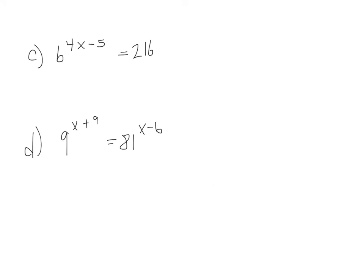For problem C: I have 6 to the 4x minus 5 equals 216. I'm going to rewrite 216 as the same base as 6. I can, because 216 is 6 to the third power. So because their bases are now the same, 4x minus 5 equals 3. Add the 5 over — that's 8 — so x equals 2.